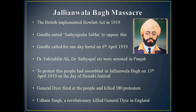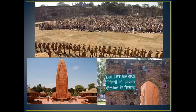This incident angered a man called Udham Singh. He got angry and wanted to take revenge. He went to England — after the incident, General Dyer had actually been honored in the English parliament for his act. To kill him, Udham Singh went to England, collected money with great difficulty, worked there, and waited for an opportunity. Finally he got the opportunity and killed General Dyer in England. Udham Singh, a revolutionary, killed him there.